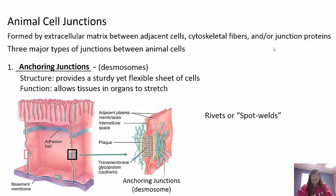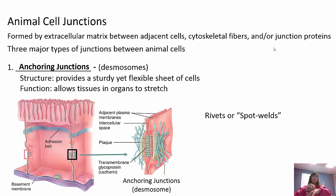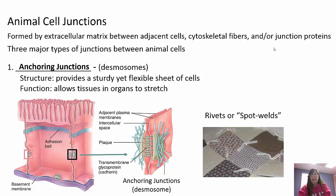Animals have three different types of junctions. Anchoring junctions are called desmosomes - they allow flexibility, providing a sturdy but flexible sheet of cells that allows tissues and certain organs to stretch. They're like spot welds or rivets - in your skin, for example, you can pick it up and it won't tear; it stretches and goes back. Areas that need this include the heart, stomach, bladder, and skin.